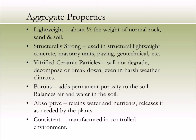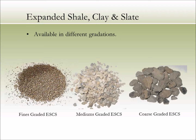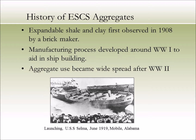ESCS aggregates are absorptive, retaining water and waterborne nutrients which are then readily available to roots and plants. The aggregates are manufactured in a controlled location according to industry standards, giving engineers and designers confidence through consistent, predictable, and dependable properties. ESCS aggregates are available in several different sizes or gradations. The three most common grades are fines, mediums, and coarse. The proper grade is determined by the design criteria or project requirements, and industry experts can help determine which grade is best suited for a particular design.